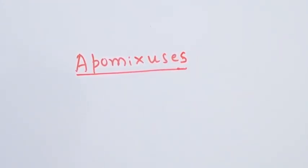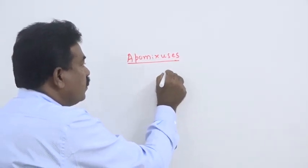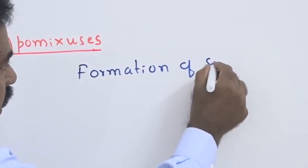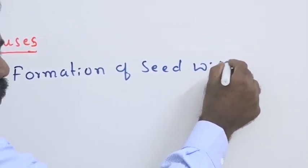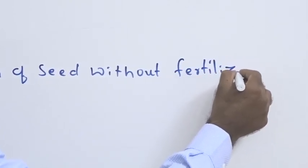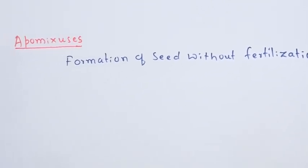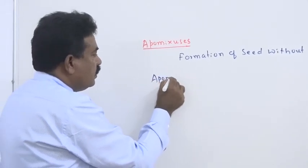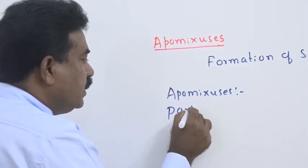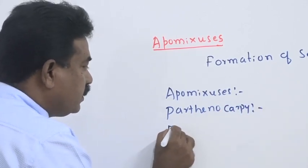If you take the term apomixis, apomixis refers to without a mixing of egg and sperm. Therefore, the formation of seed without fertilization, we call apomixis. Basically, there are three important processes that include apomixis, parthenocarpy and parthenogenesis.